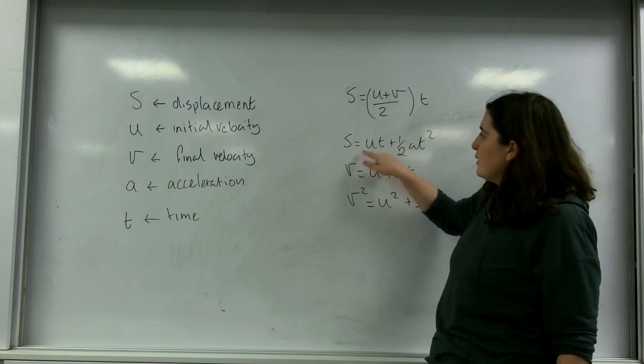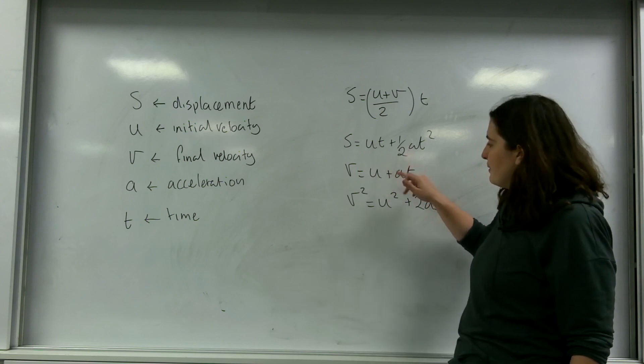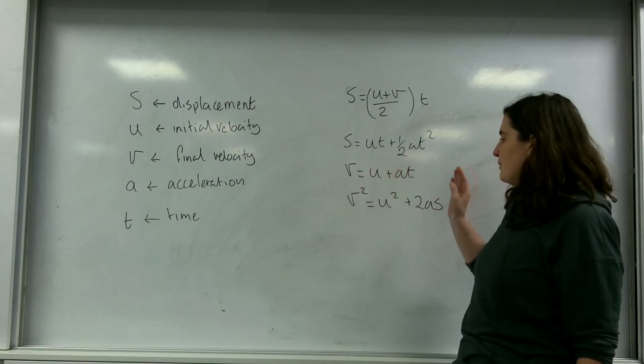S equals UT plus a half AT squared. Final velocity is initial velocity plus acceleration times time, so V equals U plus AT. And V squared equals U squared plus 2AS.